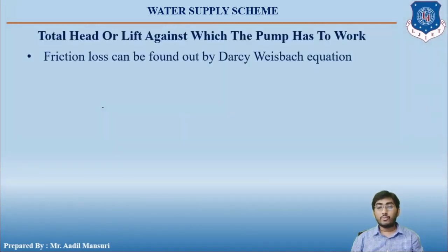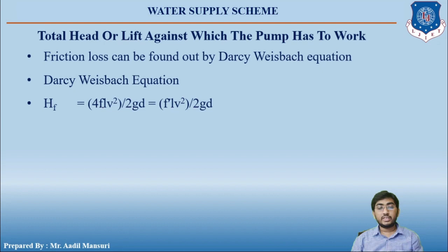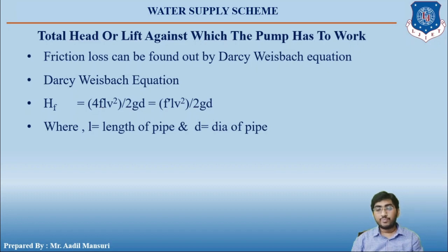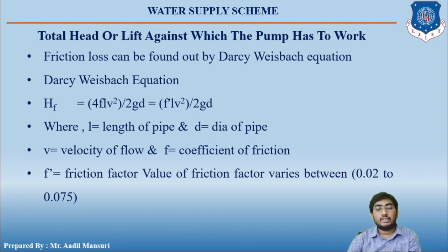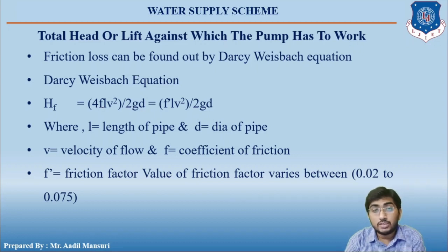Frictional losses can be found using the Darcy-Weisbach equation: hf = 4fLv²/2gd, or hf = f'Lv²/2gd, where L is the length of the pipe, d is the diameter, v is the velocity of flow, and f is the coefficient of friction. When 4f is replaced by f', then f' is the frictional factor, whose value varies between 0.02 to 0.075.